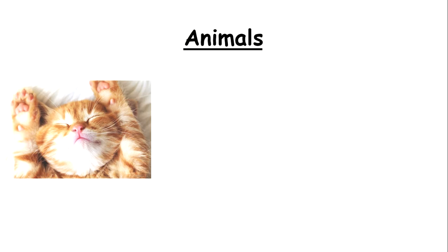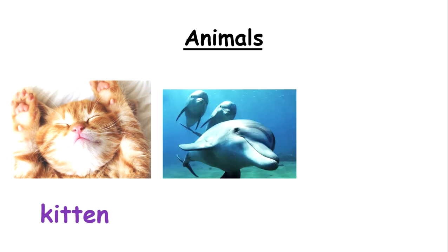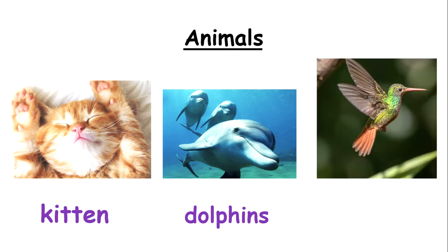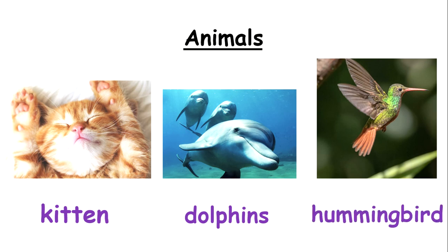Now let's look at some animals. What is this? This is a very sleepy kitten — so 'kitten' is the noun here. What about these animals? They are dolphins, so 'dolphins' is a noun — more than one of them, so we add the S: dolphins. Now what about this? It is a hummingbird, so 'hummingbird' is a noun. All of these names for these animals are nouns.